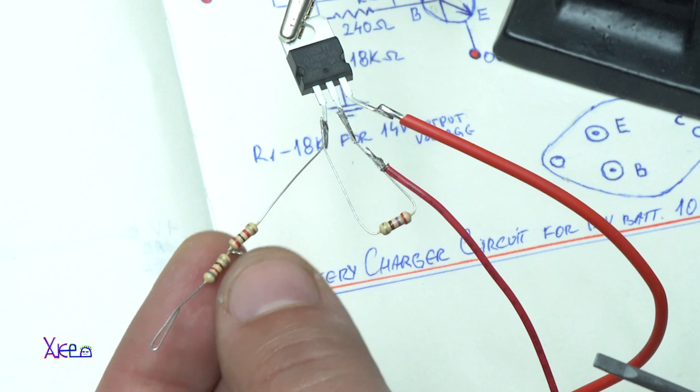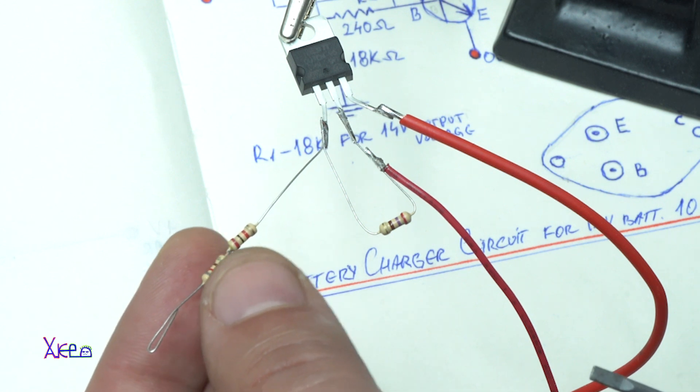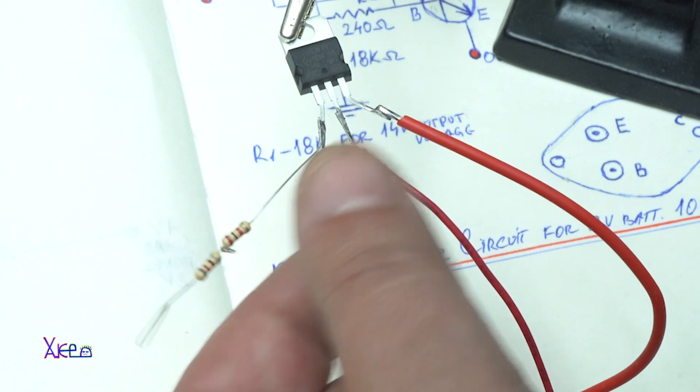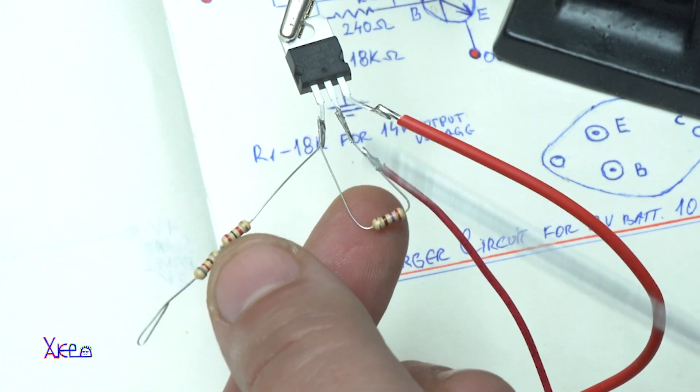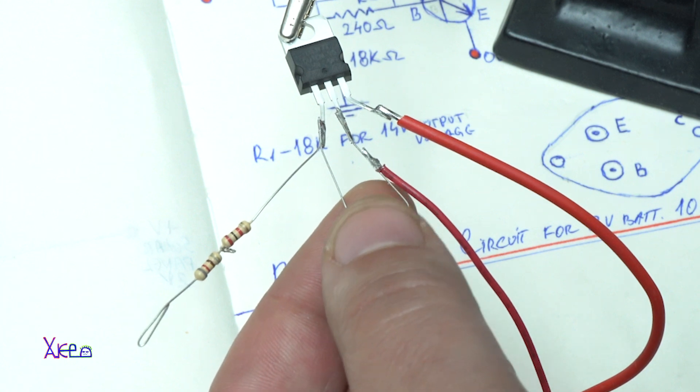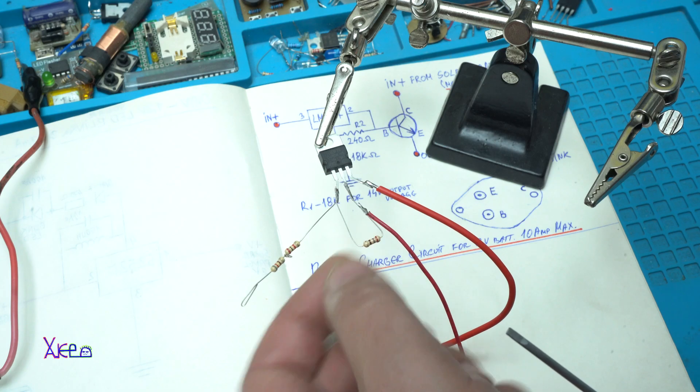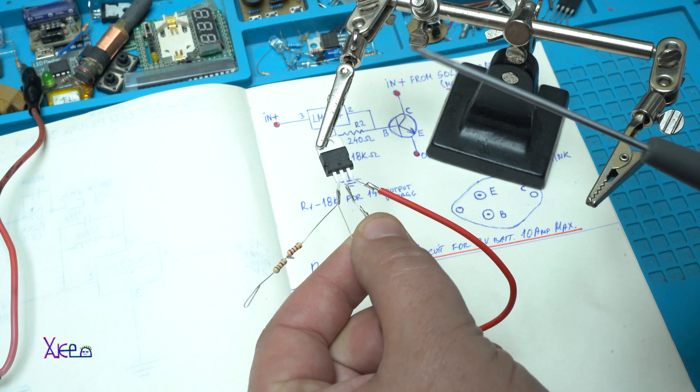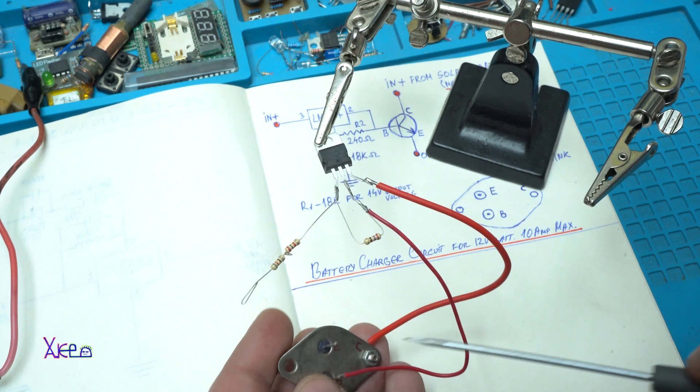One is 2 kilo ohms and 820 ohm resistor together will give 2.8 kilo ohms. This is for the current resistor of 240. I am using 270. It is not a big deal. Everything is connected.